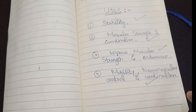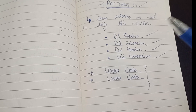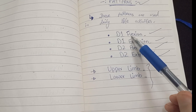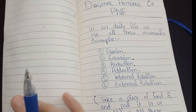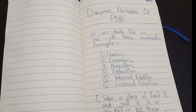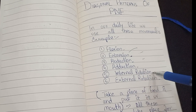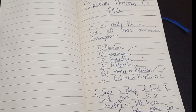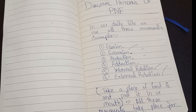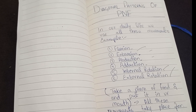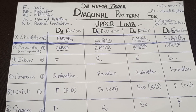Moving towards the pattern overview: there are four patterns used in daily life activities — D1 flexion, D1 extension, D2 flexion, and D2 extension — for upper and lower limb diagonal patterns of PNF. In our daily life we use all these movements. For example, taking a piece of food and putting it in your mouth involves flexion, extension, abduction, adduction, internal rotation, and external rotation.